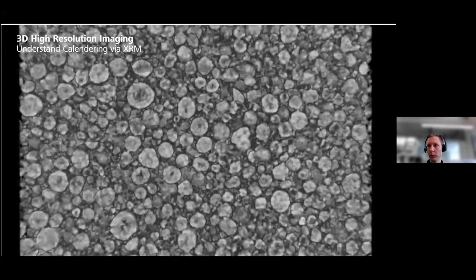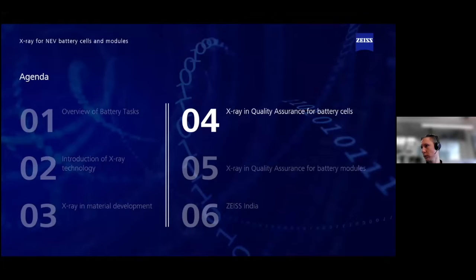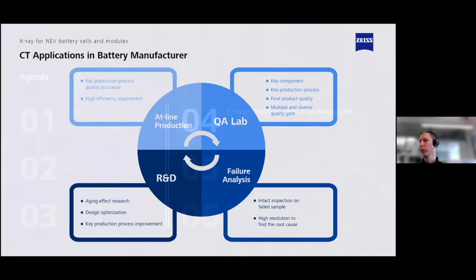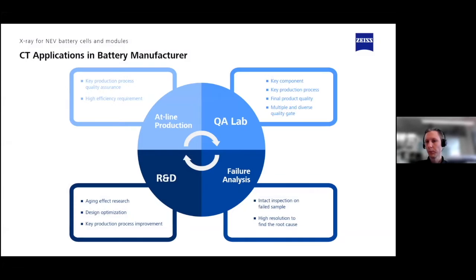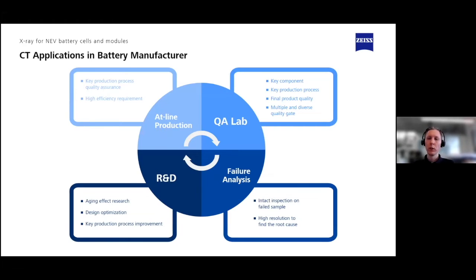Now we've seen a little about microscopy. Let's go to the next step: battery cells and traditional computed tomography systems. One of the biggest advantages of CT is its high flexibility — it can be used at many different stages of the process. You can use CT for research and development, even if you cannot reach below one micron resolution. You can go down to maybe three, four, or five microns. You can also use the same system for production, though standard CT is not for 100% inline inspection. It can be used for closed-loop or at-line production evaluation.